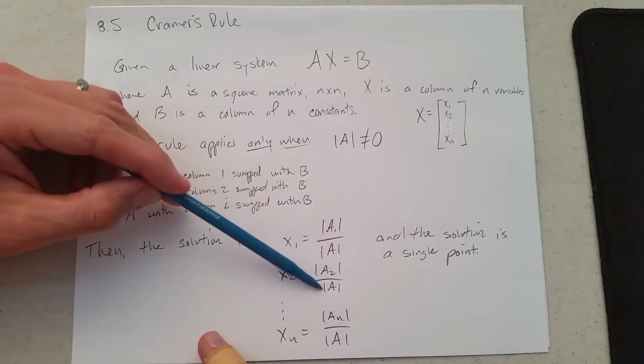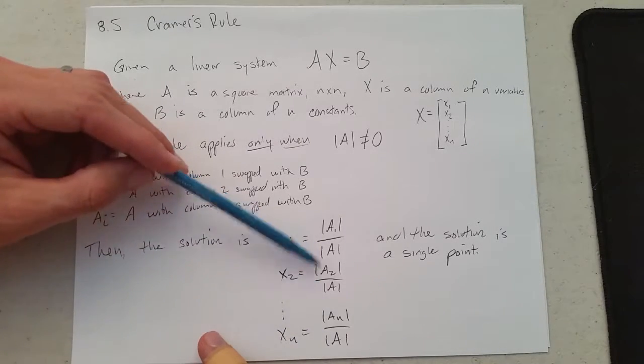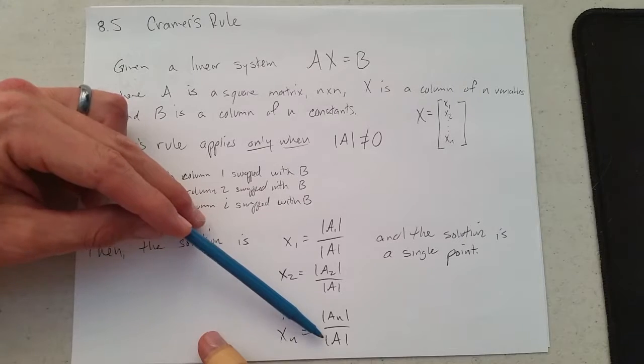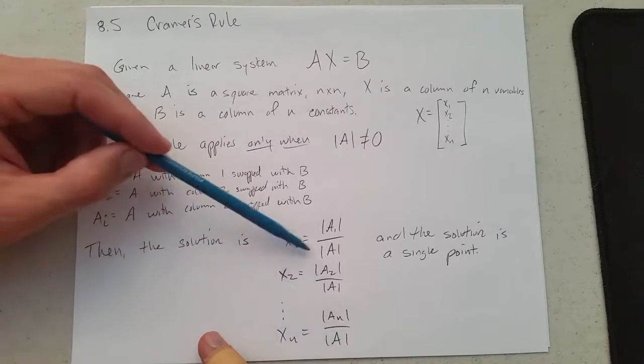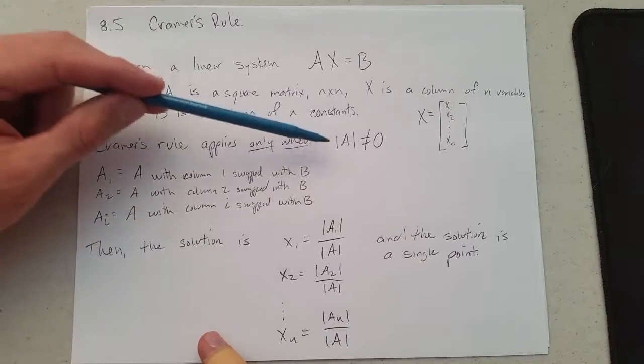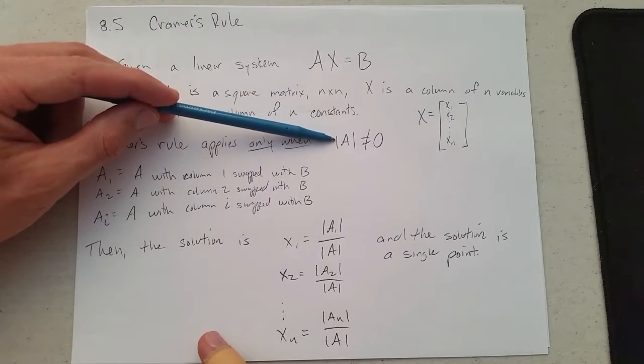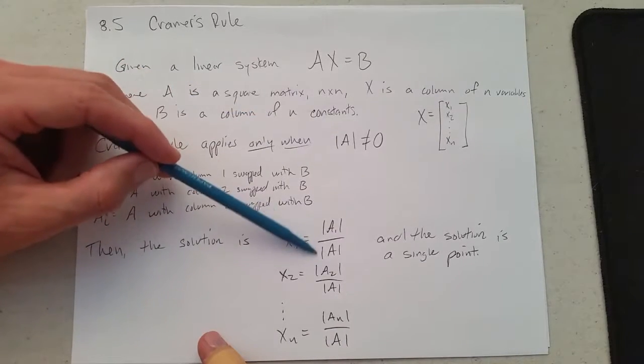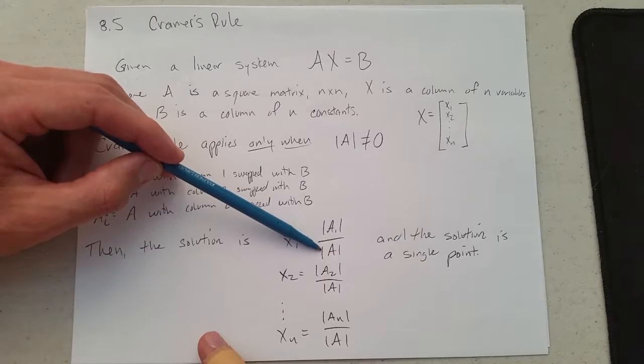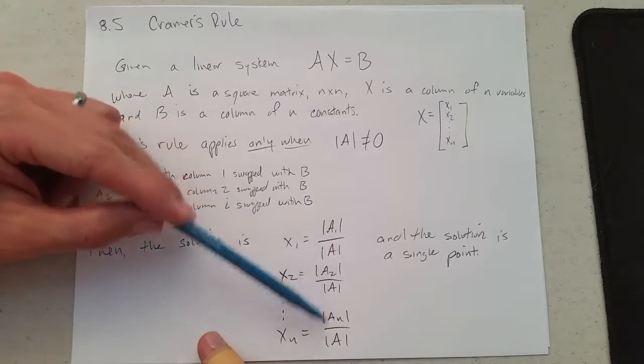If the determinant of A is zero, you're going to be dividing by zero, which indicates something's not right. If your determinant of A is zero, this doesn't work. If you don't realize it before you start, as soon as you compute the determinant of A and need to divide by it, you'll have division by zero.